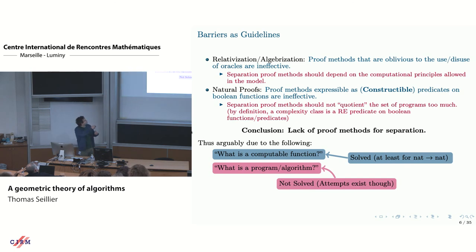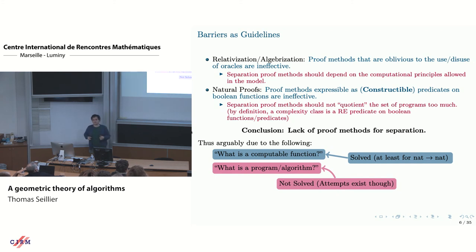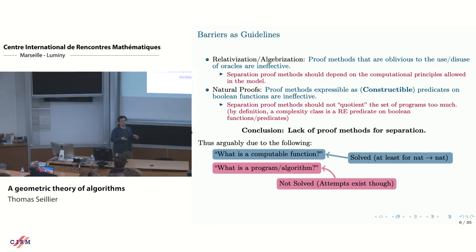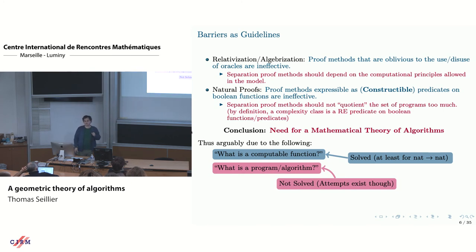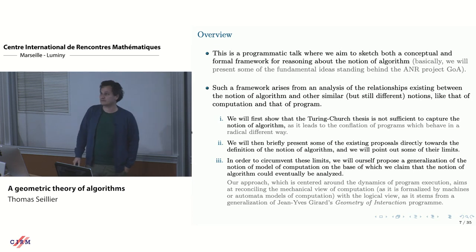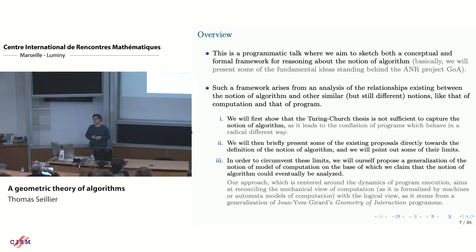For me, this is related to this question. People have asked what's a computable function, and we have an answer. But the question we really care about in complexity is: what is an algorithm, what's a program? If you don't want to quotient them too much, you have to understand what they are. That's the origin story of why I care about this question. The conclusion is that we need a mathematical theory of algorithms.